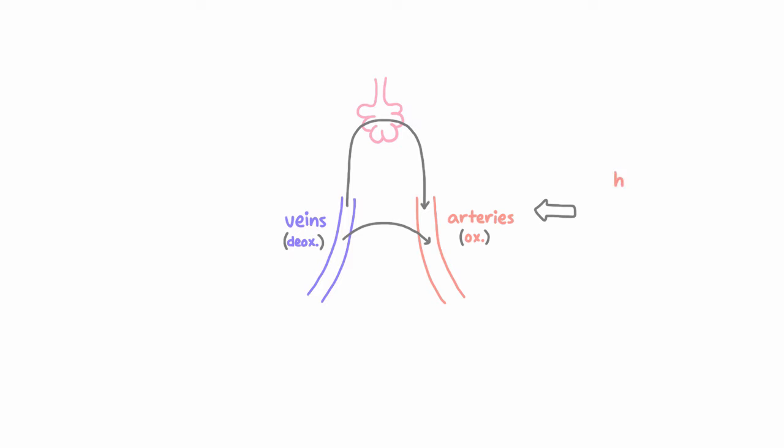Shunt can arise from disease of the heart, the pulmonary vasculature, or the alveolar airspace.